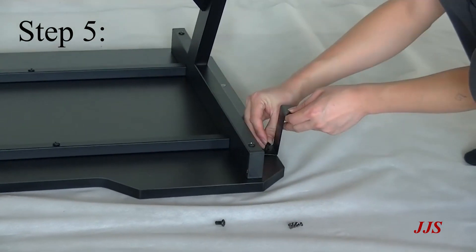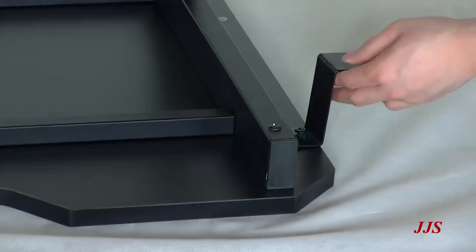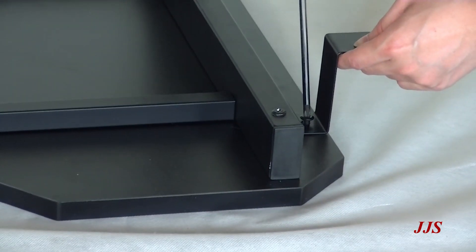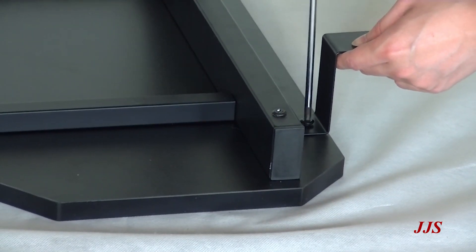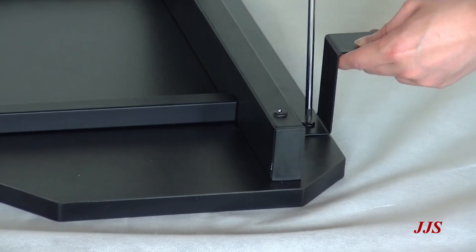Step 5. Attach the headphone hook to the bottom side of the desk using screw D and F. You can tighten them up using a Phillips screwdriver.